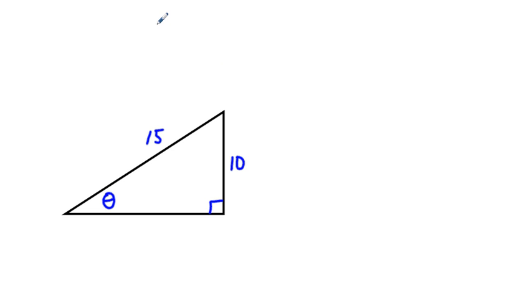The first ratio we're going to look at is sine. The sine of theta is equal to our opposite side over our hypotenuse.